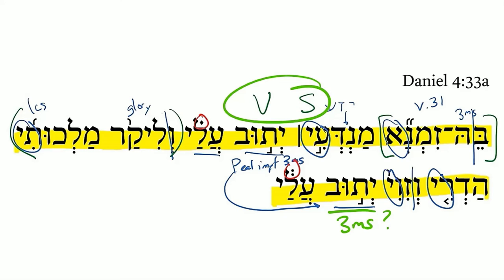We have gender available, but glory and majesty and splendor are all masculine, so that's not going to help.